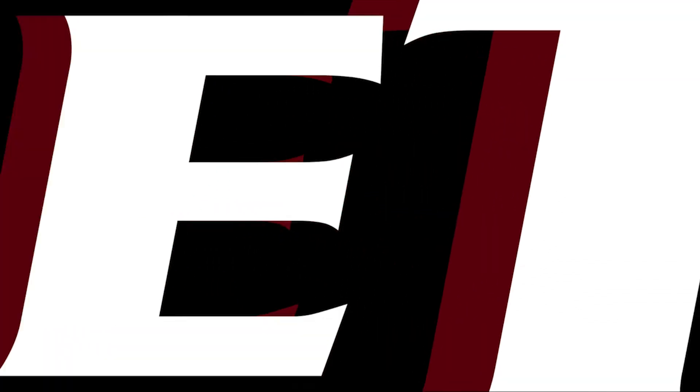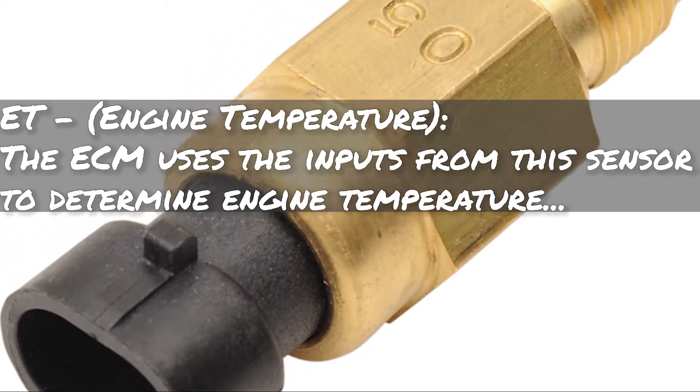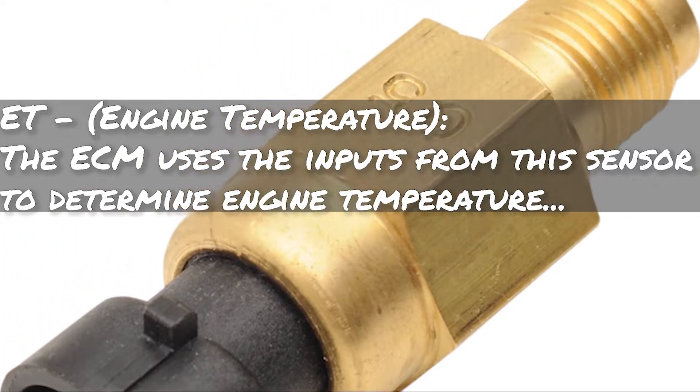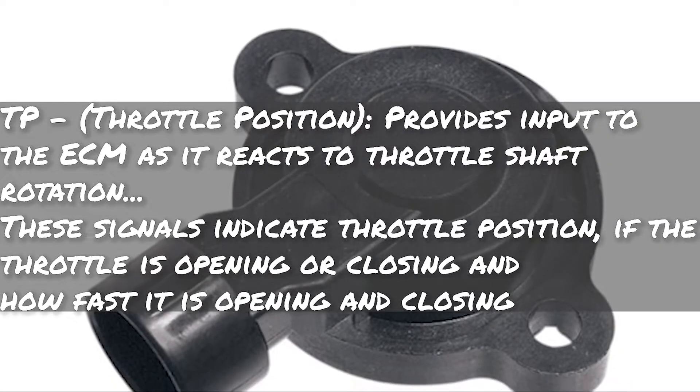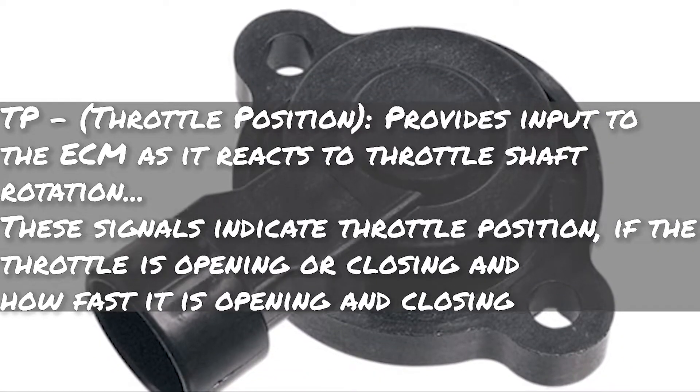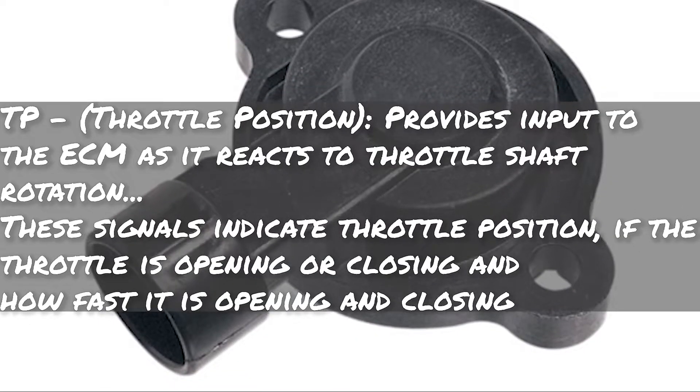Fourth is engine temperature. The ECM uses the input from this sensor to determine engine temperature, which has a pretty big effect on timing. Fifth is TP, throttle position. This provides input to the ECM as it reacts to throttle shaft rotation. These signals indicate throttle position, whether the throttle is opening or closing, and how fast it's opening and closing — so it knows if you're really getting on it versus rolling on gradually.